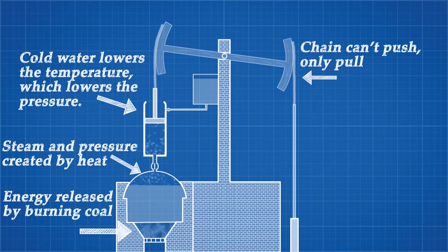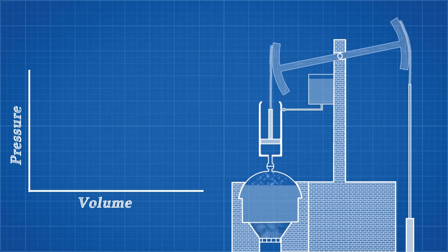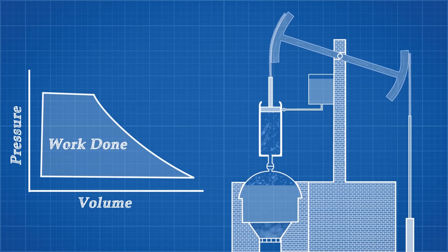We want to be able to quantify how much work is being done per cycle of this engine. To do that, we plot the pressure and volume inside the piston cylinder for one cycle, like this. The area inside is the work done, but this is the idealized PV diagram. In practice, there is a lot more energy being wasted.